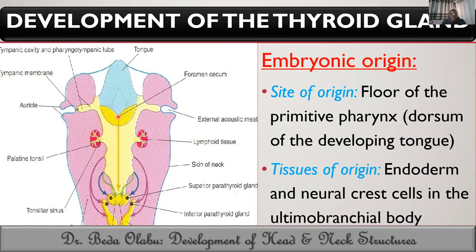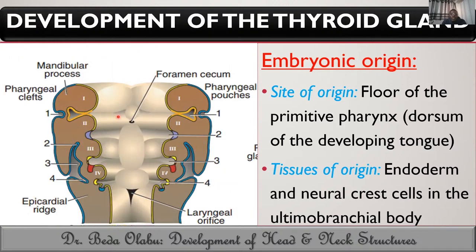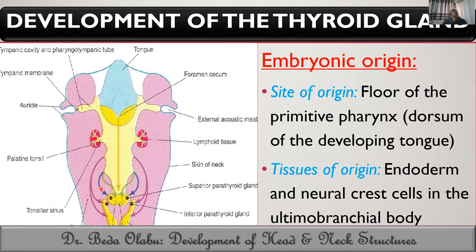The cells in the ultimobranchial body are derived from neural crest cells. Those neural crest cells of the ultimobranchial body are the ones which give rise to the parafollicular cells of the thyroid gland. So in terms of tissues of origin: endodermal cells give rise to follicular cells, and neural crest cells give rise to parafollicular cells. The connective tissue elements of the thyroid gland come from mesenchymal cells.